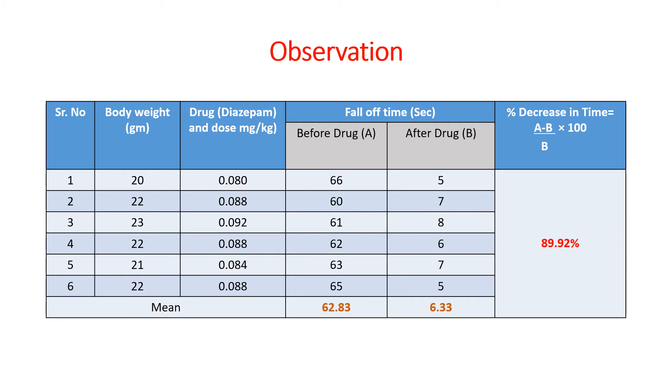You can see here, we have taken 6 animals. The body weight of the animals is 20, 22, 23, 22, 21, and 22 grams. Then we will inject the drug, diazepam, at a dose of 4 mg per kg. We will calculate by doing cross multiplication to get the dose of diazepam. Then we will calculate the fall off time in seconds.